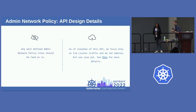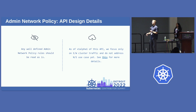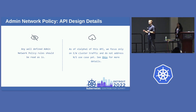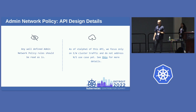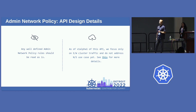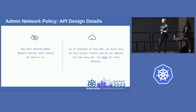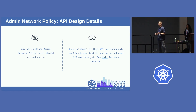Two key principles we started with for Admin Network Policy: the API was designed to be extremely readable and explicit — there is no implicit behavior as with network policy. For V1 Alpha 1 of this API, we're also focusing only on east-west traffic, and we hope to address north-south traffic in a further release. We've tried to keep it simple and our user stories do not mention north-south yet.